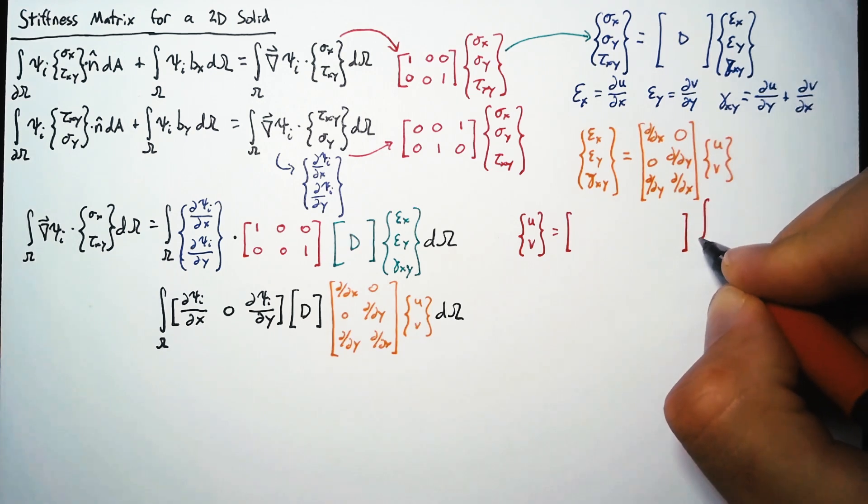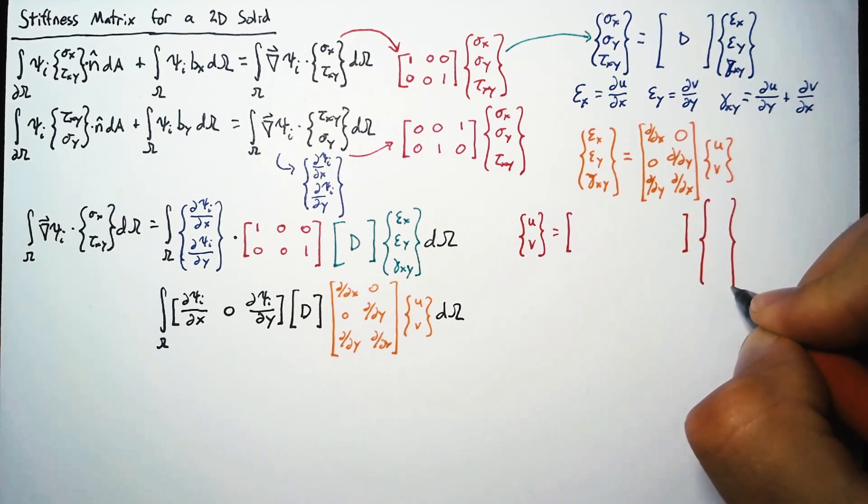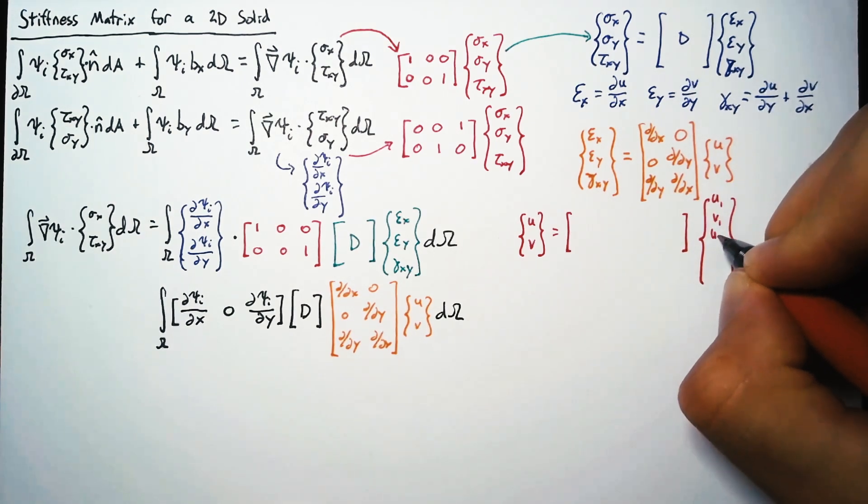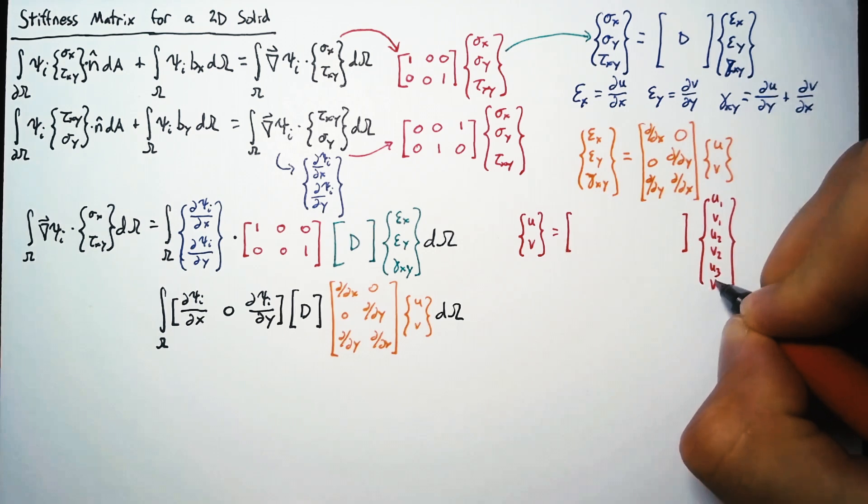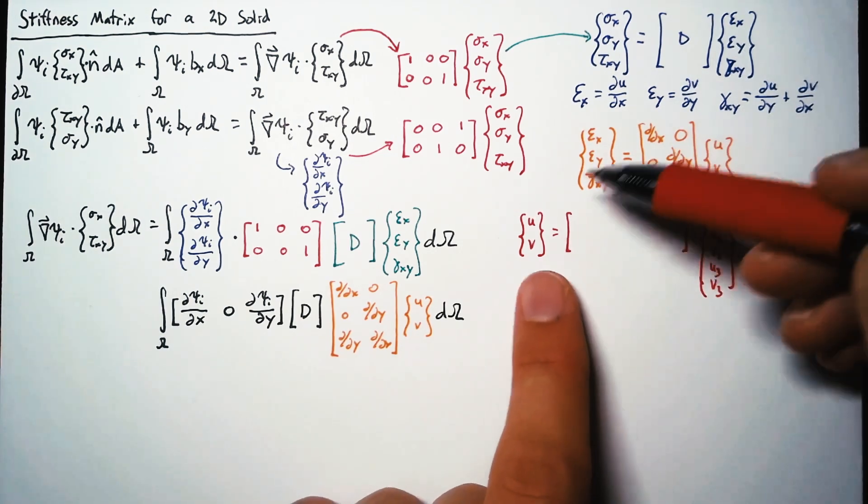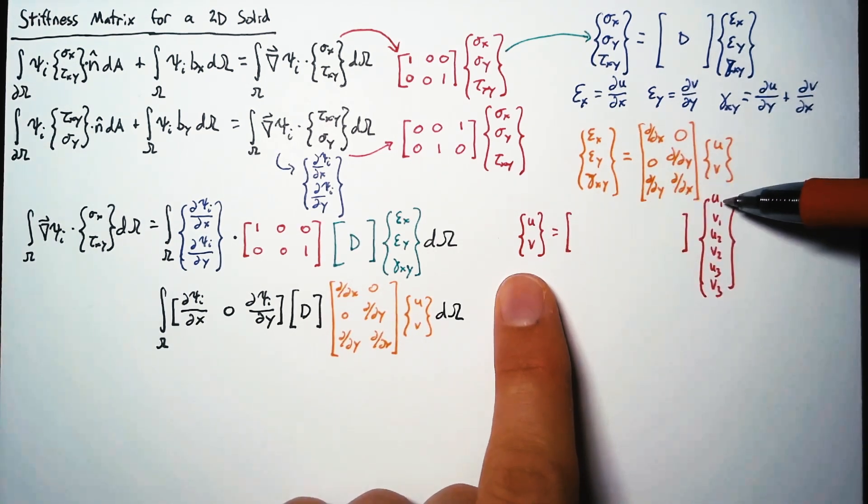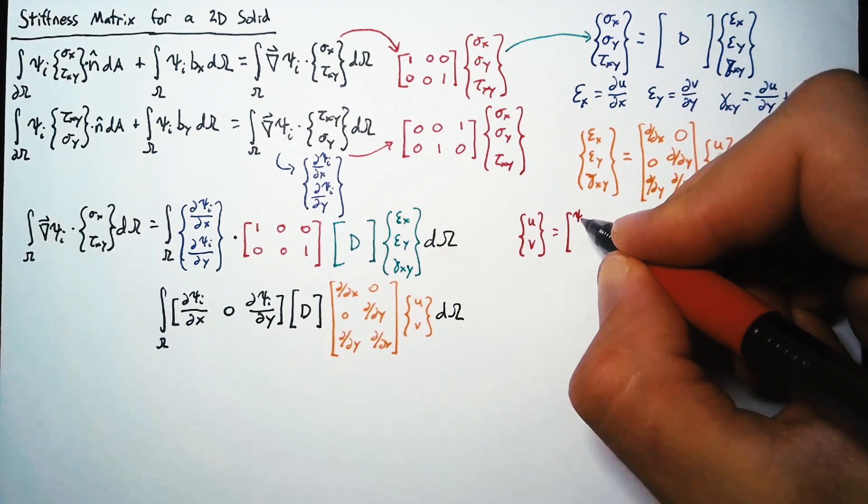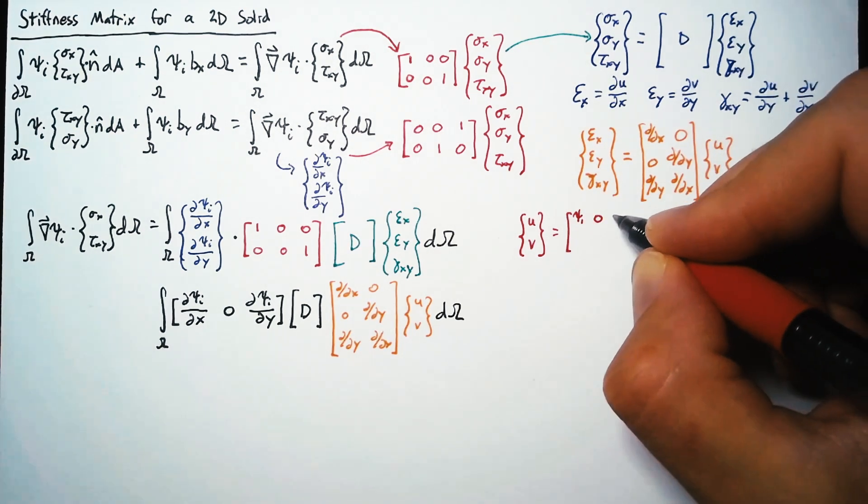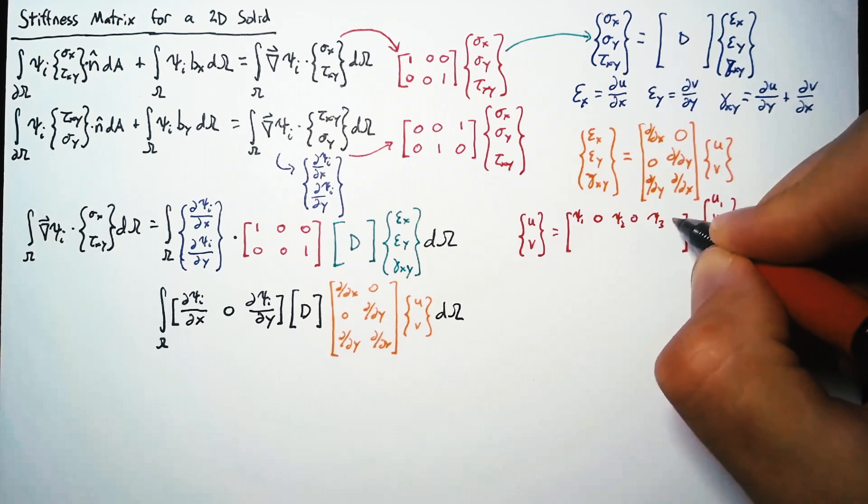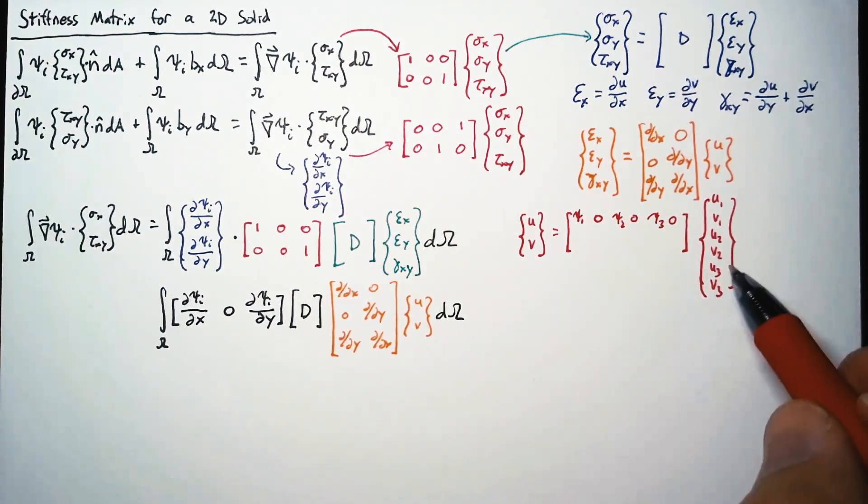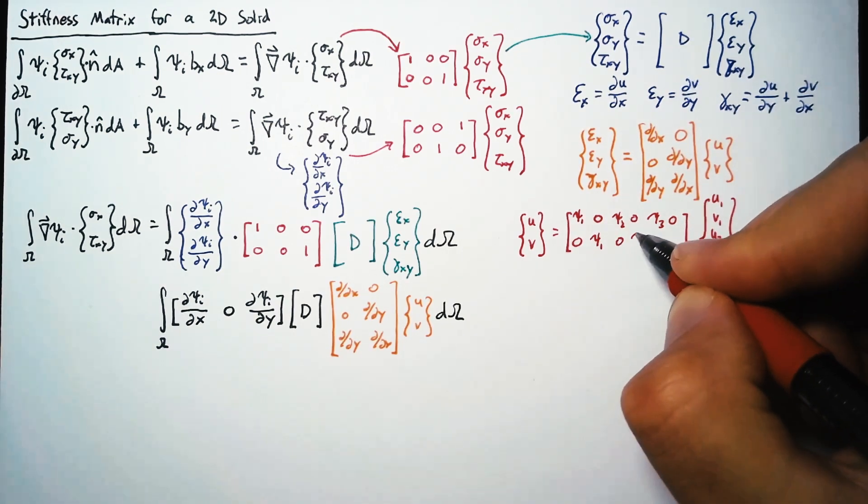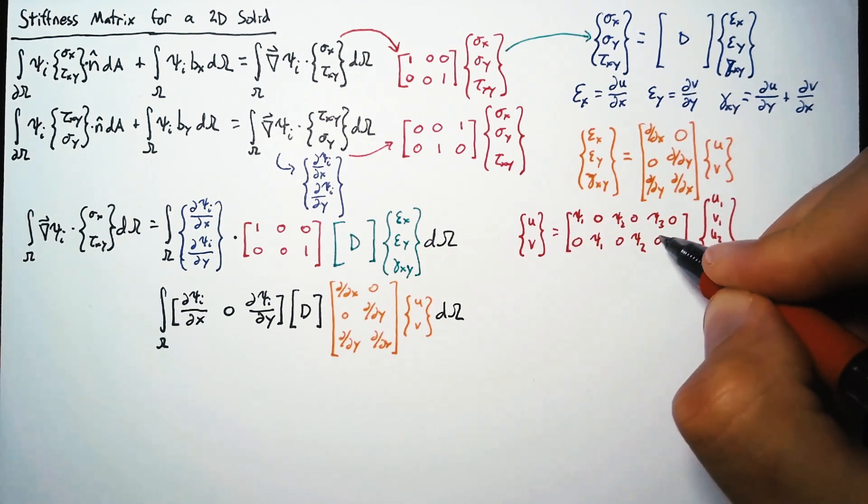So what we can do is expand out our u and v term to be equal to some matrix, which is then multiplied by a vector of nodal displacements. We said this was going to have three nodes, so we'll have u1, v1, u2, v2, u3, v3. And so u should be psi 1 times u1, psi 2 times u2, and psi 3 times u3. So we can write that as psi 1, 0, psi 2, 0, psi 3, 0. And then v is going to be the same, but we're looking at v1, v2, v3. And so that ends up just staggering the position of those shape functions.